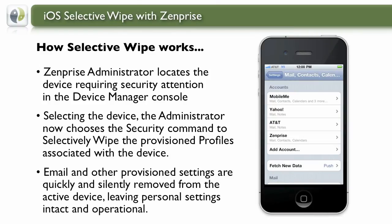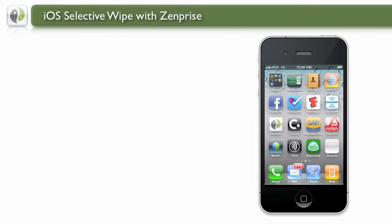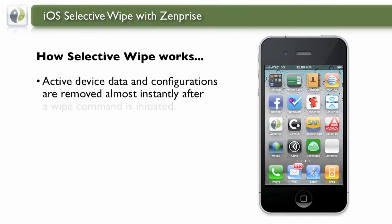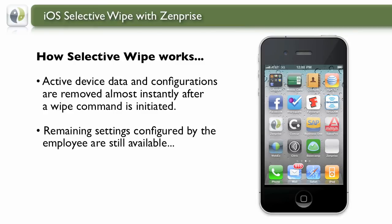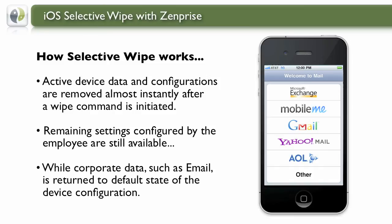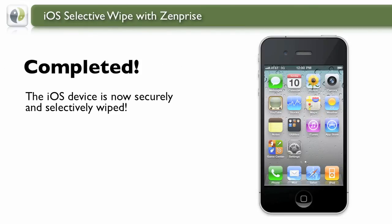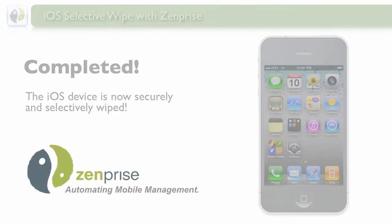When initiated, the Selective Wipe will only remove those ZenPrize provisioned settings and data, thereby leaving untouched the employee-configured settings, data, and applications. Active device data and configurations managed by ZenPrize are removed almost instantly after a Wipe command is initiated. Remaining settings configured by the employee are still available, while corporate data such as email is returned to the state of the original device configuration. The iOS device is now securely and selectively wiped.